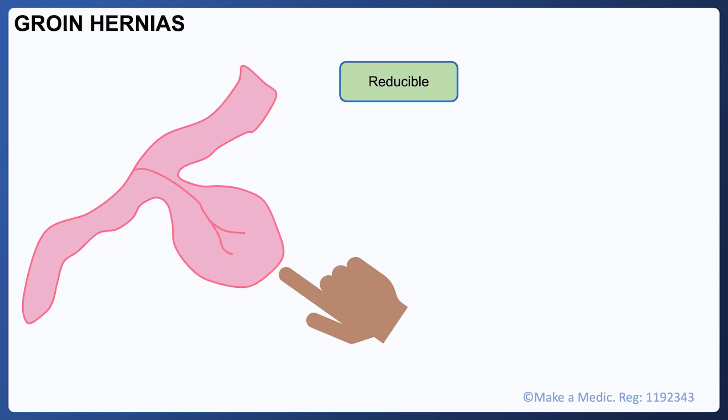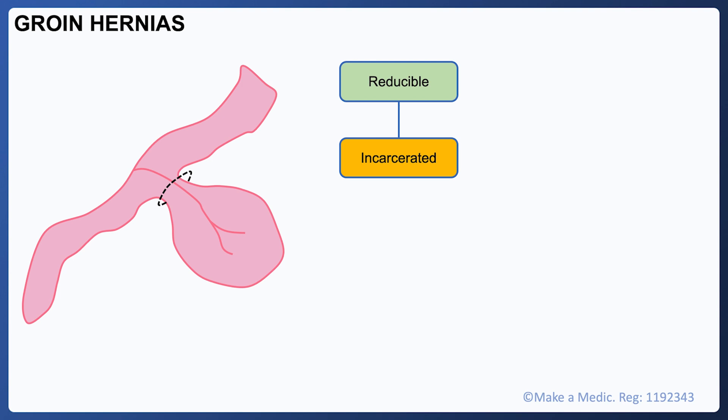Once a hernia has been identified, there are a few features on examination that can help assess how serious the case is and how urgently intervention is needed. If the hernia appears soft and can easily be pushed back into the abdominal cavity, it is described as being reducible — a reassuring finding that generally suggests the case can be managed as an outpatient. If you can't push the hernia back in, it is described as being incarcerated, which is of concern because it can result in bowel obstruction and ischemia of the loop of bowel contained within the hernial sac.